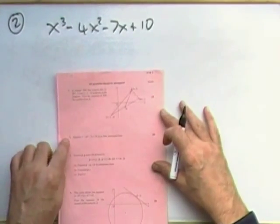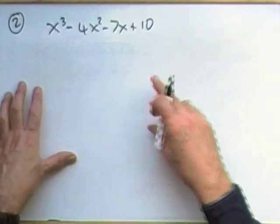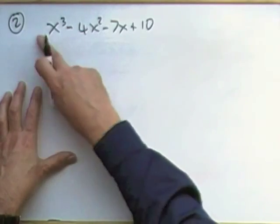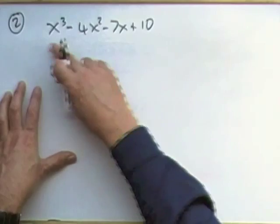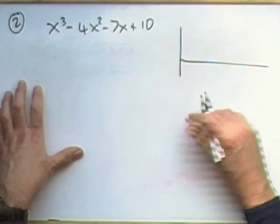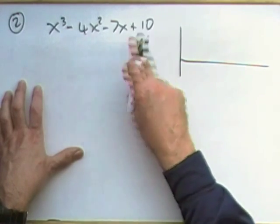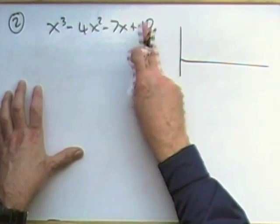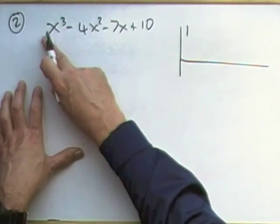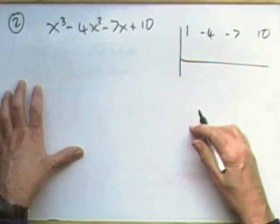Question 2: here's a polynomial, degree 3, highest power 3, factorise it. First I'm going to check, are there any common factors out of the coefficients? No. What about the letter X appearing on them all? No. That means I can just go straight to synthetic division. There are 4 terms, there's no missing terms. Power 3, power 2, power 1, power 0, so you just put in the coefficients: 1, negative 4, negative 7, and 10.